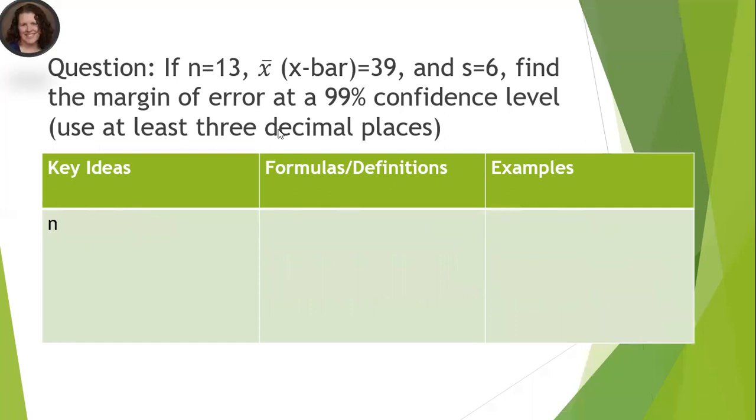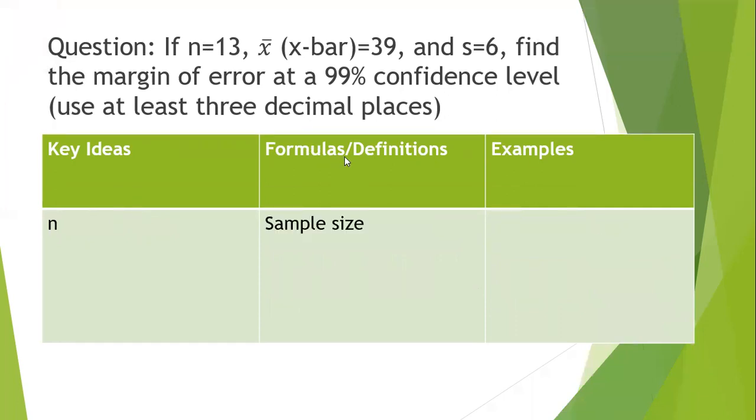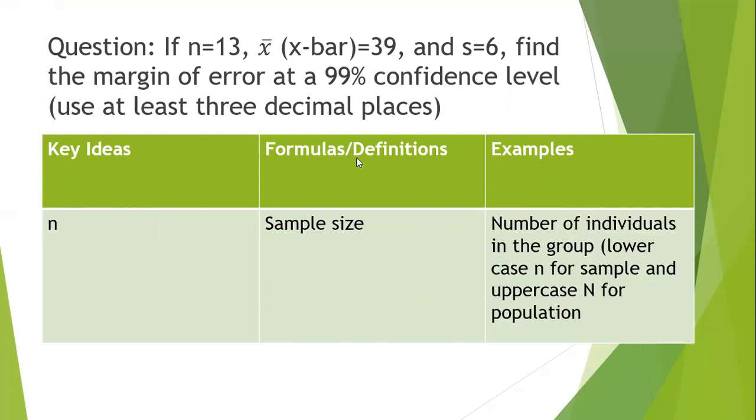So n, lowercase n, is your sample size - the number of individuals in the group. Capital N would be for the population. If you're looking at a specific type of bear and you have a sample of a hundred of them, you'd use lowercase n to represent 100 bears in your sample. If you know that in the entire world there's 5,000 bears, then you'd use capital N as the population value.